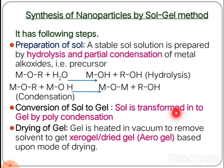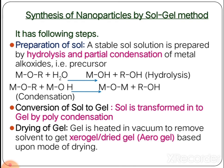Next, conversion of sol to gel: the sol is transferred into gel by polycondensation as explained. The gel is then dried and heated in vacuum to remove the solvent, leading to two types of products — xerogel or aerogel — depending on the drying mode used.